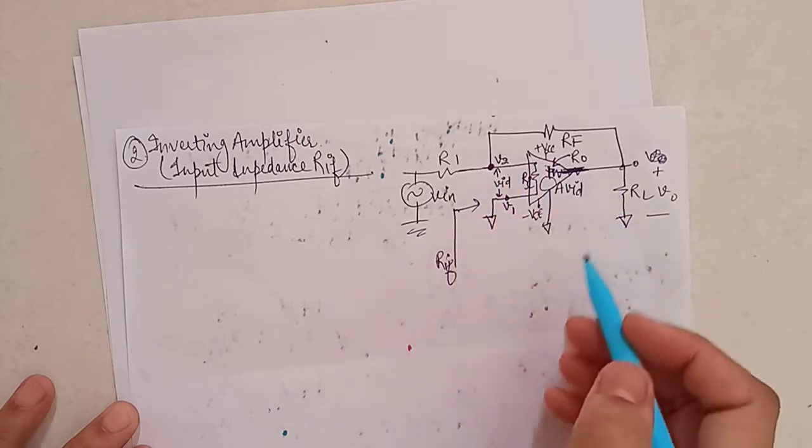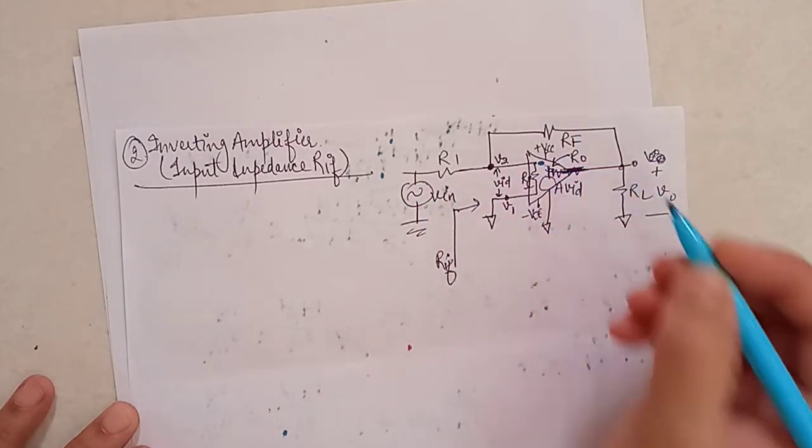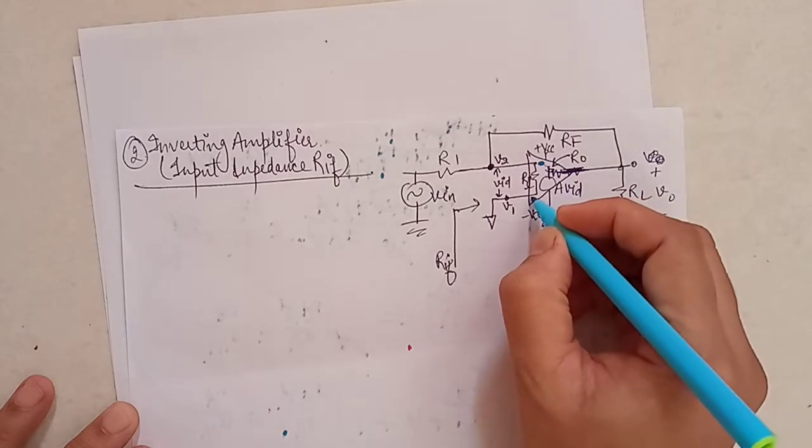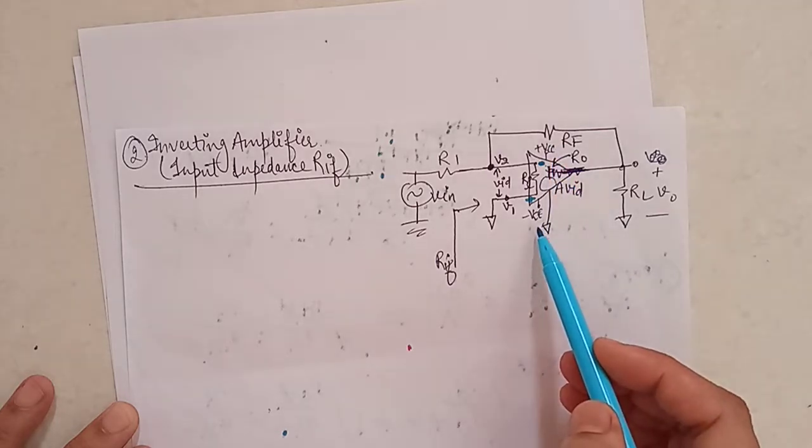You can see this diagram. This is an inverting amplifier where input is being applied to the inverting pin. This is negative and this is the non-inverting pin. Here we are using two power supplies VCC and minus VE.